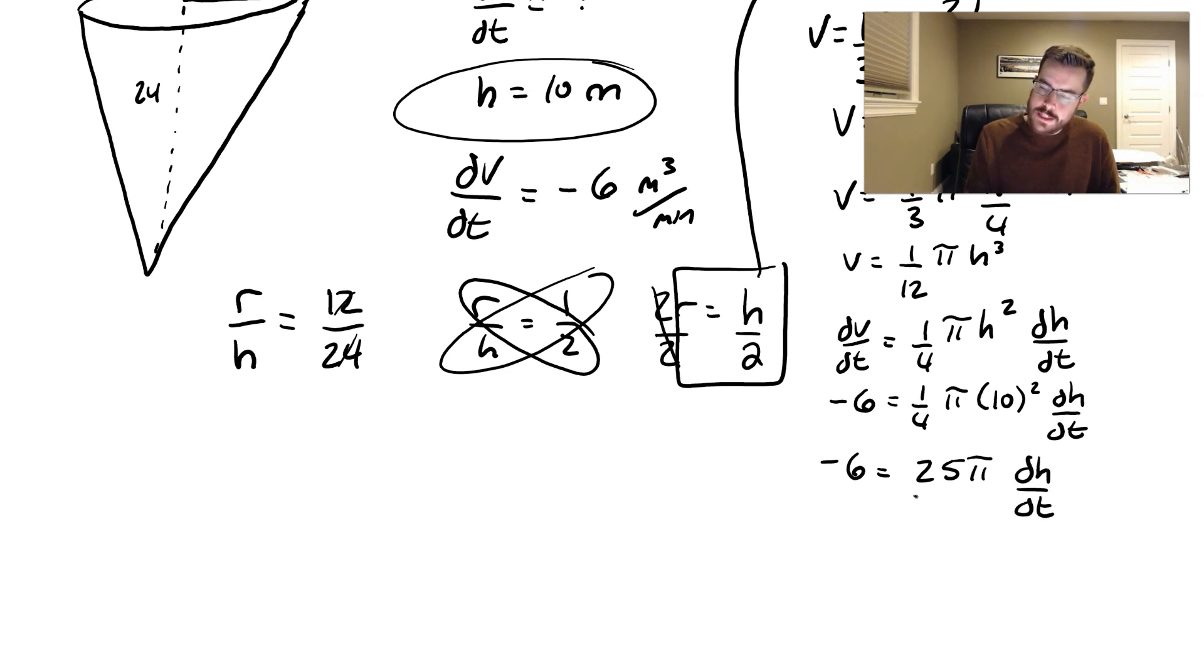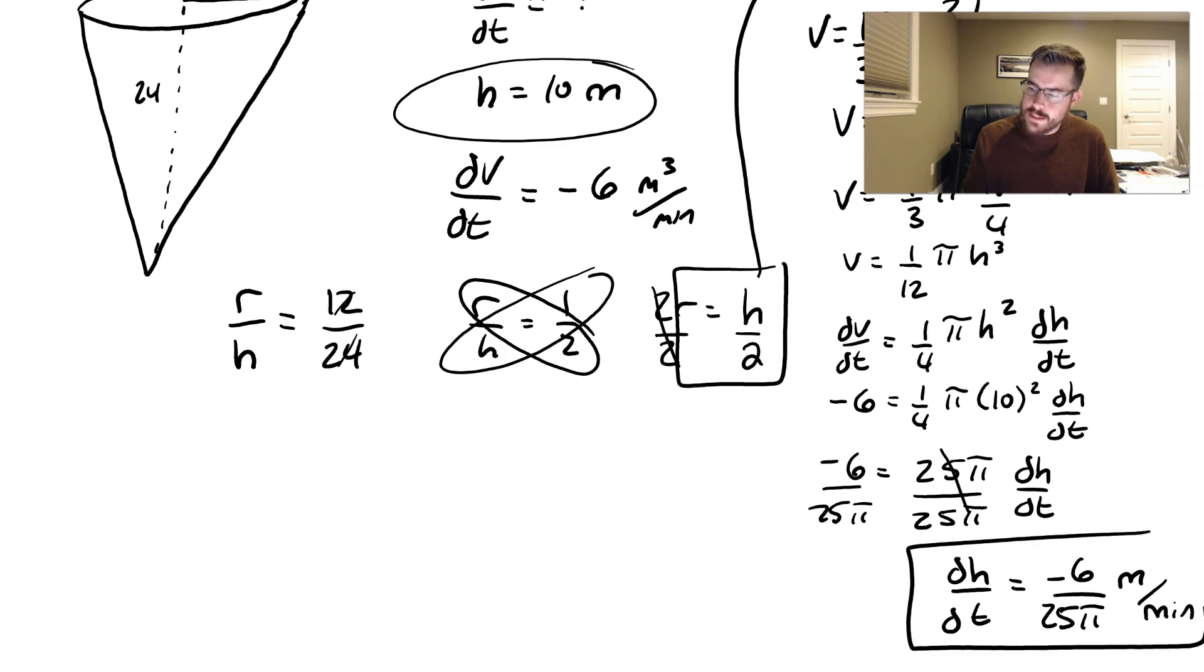And so if I find dh/dt, just divide by that 25π on both sides. So dh/dt is equal to -6 over 25π. And that's meters per minute. And there we go. That's the answer to this problem.